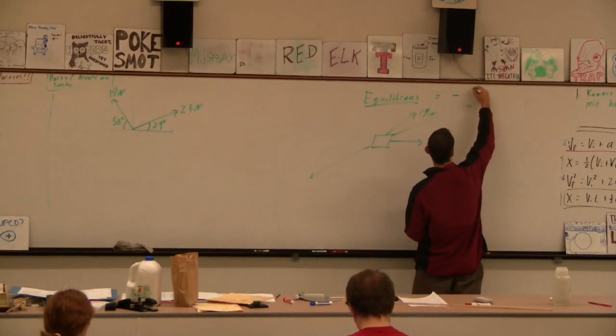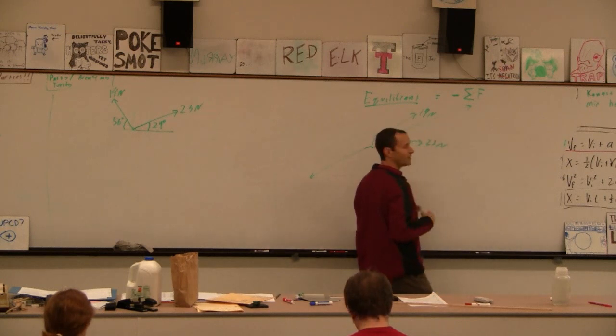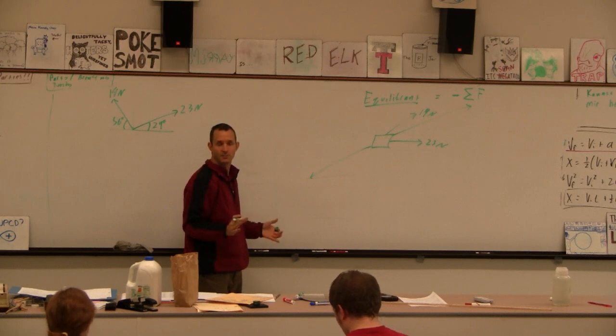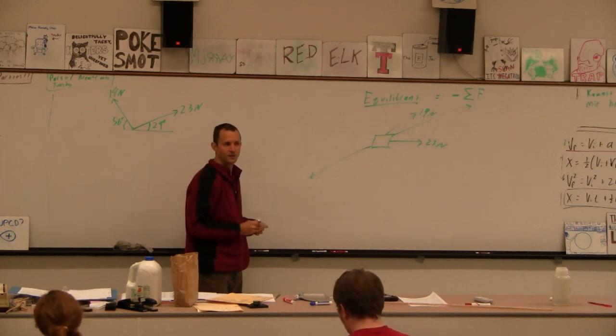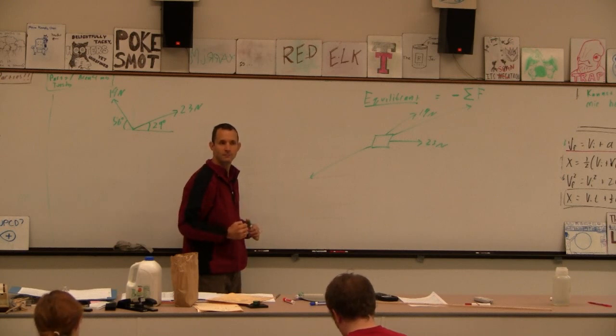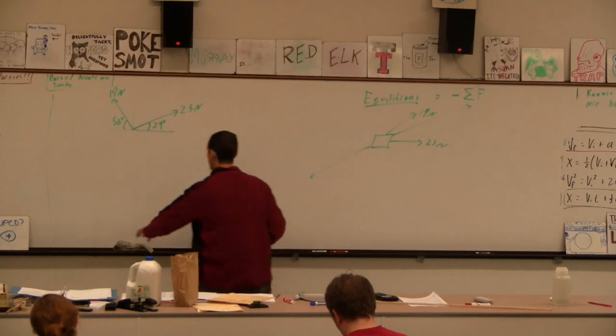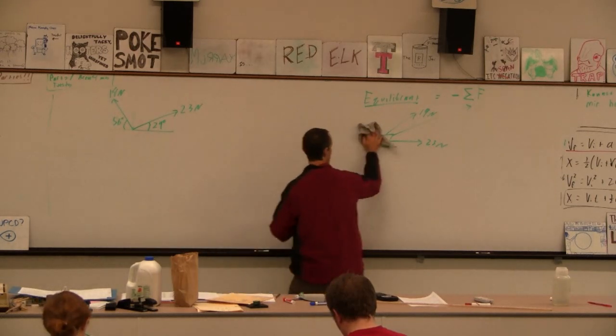Basically the equilibrant is equal to negative the sum of all the forces. If we add up all the forces and we find the negative of that, it's just that simple. So it's really just vector addition, only it's like vector addition's evil twin kind of a thing. Let me show you how to do this without making embarrassing mistakes.